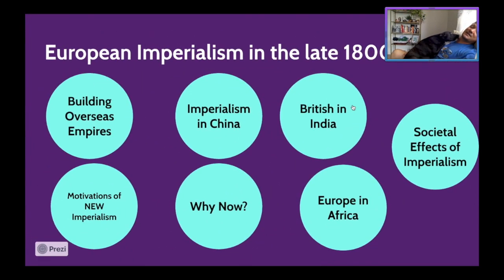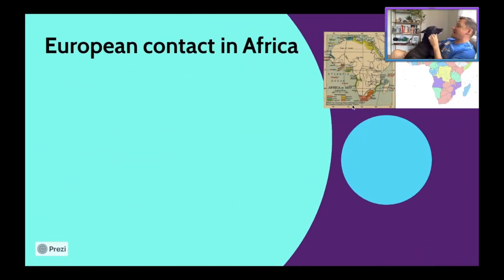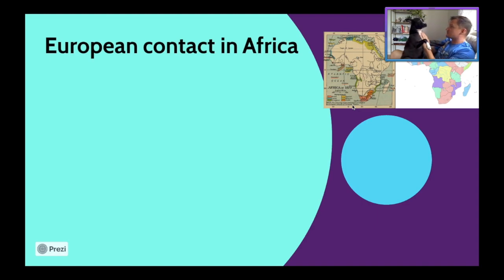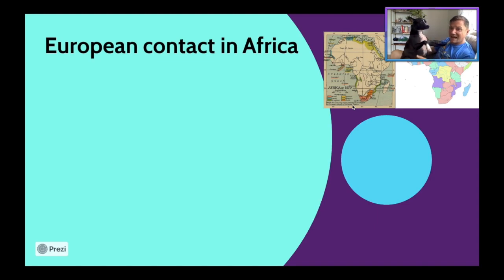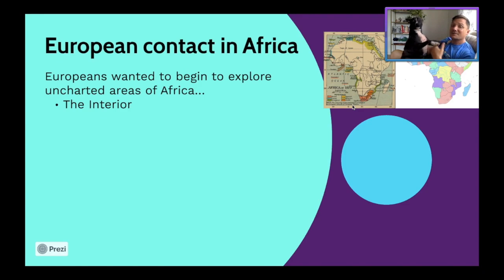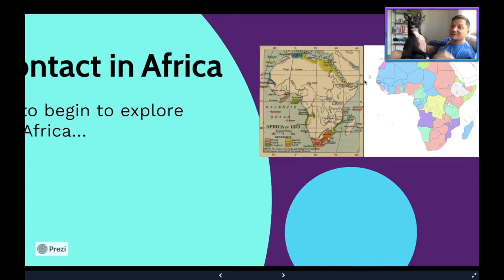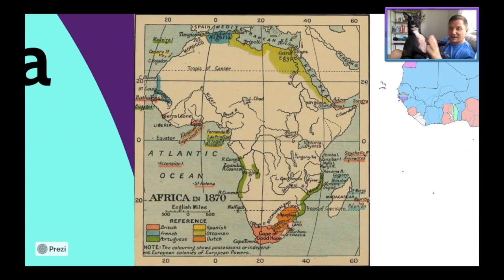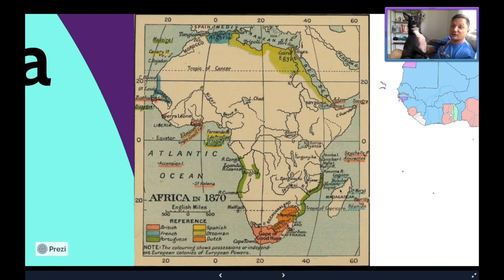We're now moving into the topic of Europeans in Africa. The Europeans have been in Africa for quite some time, setting up systems including the slave trade on the western coast going back to the 1500s, set up by the Portuguese. They were also navigating around Africa, trying to get past the Cape of Good Hope to reach Indian spices.